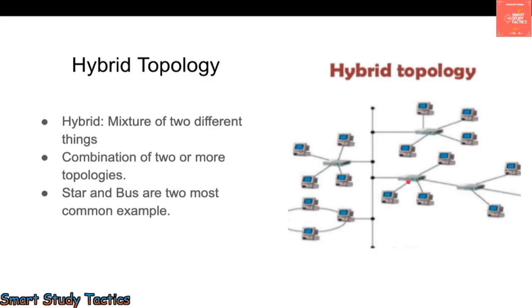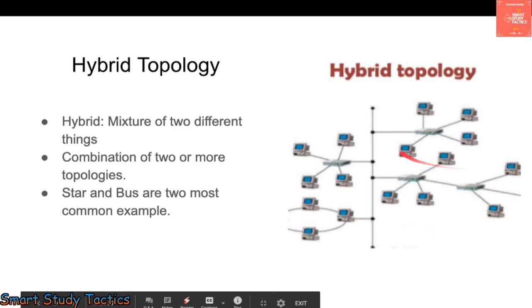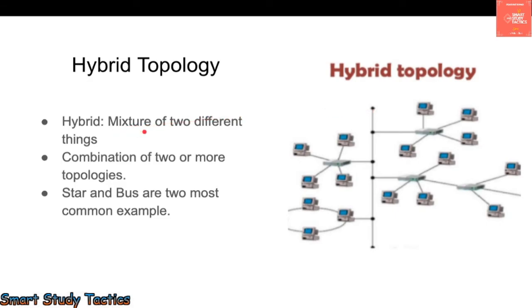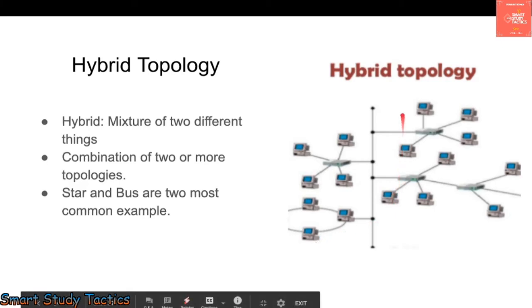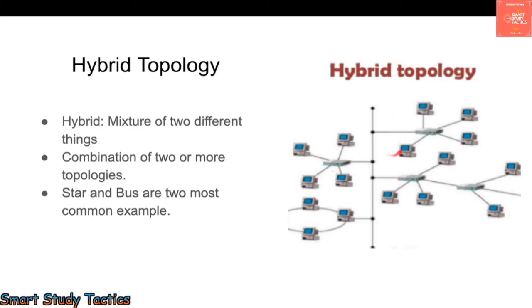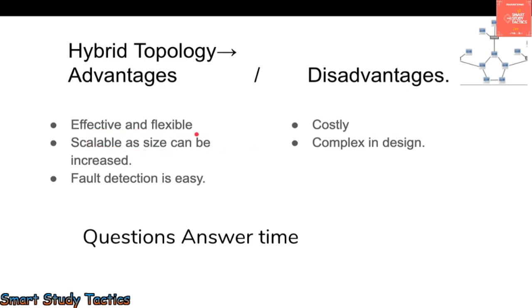Next is hybrid topology. As you can see, it combines different types of networks all connected through one cable. Hybrid means a mixture of two or more different networks — the most common example being star and bus combined. They can share messages directly with each other. Advantages: it is effective and flexible, scalable with size that can be increased, and fault detection is easy.